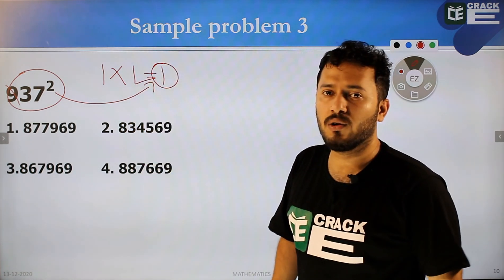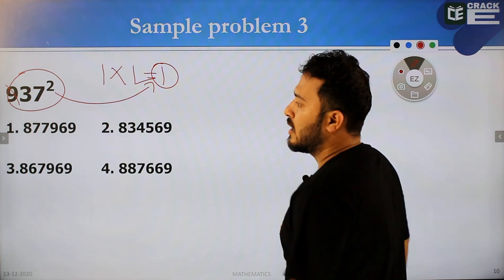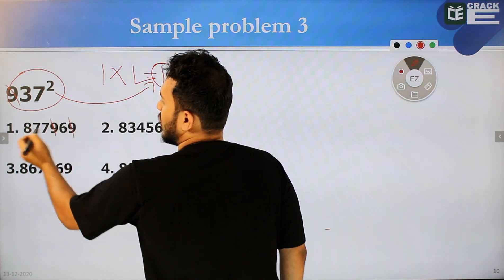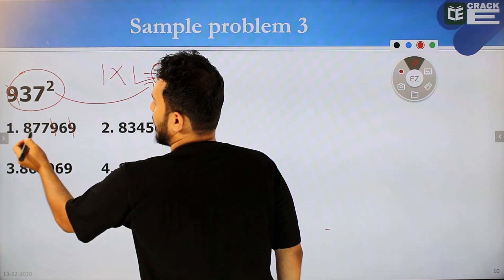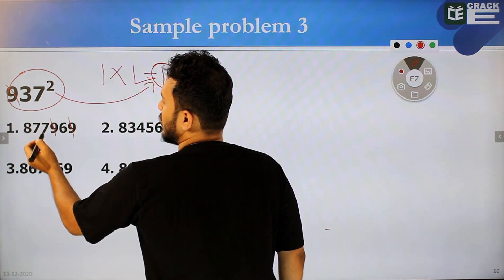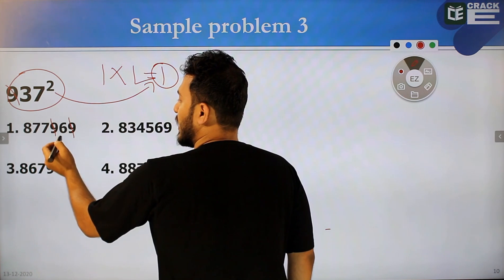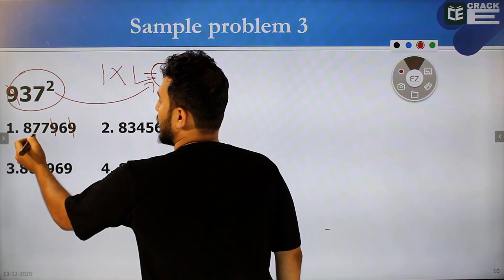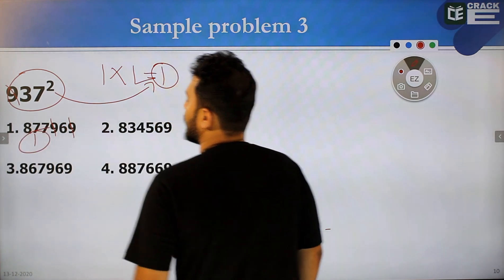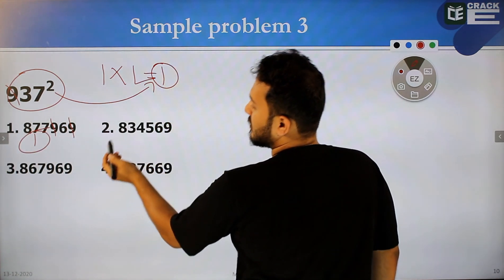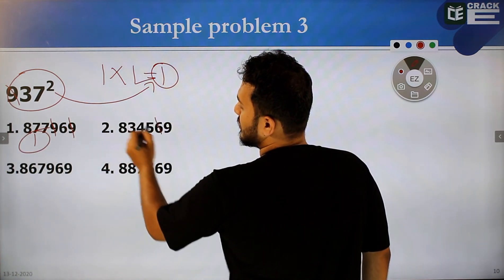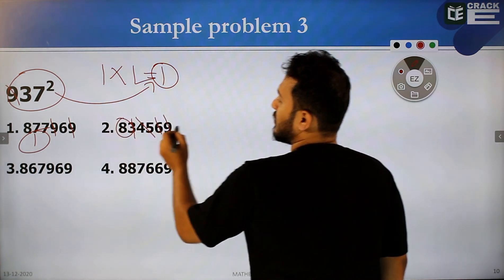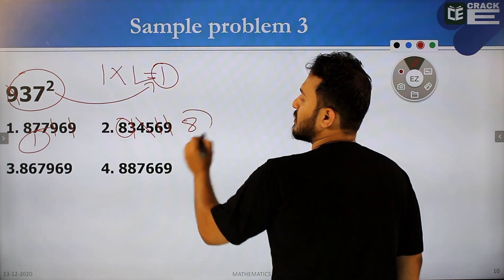Digit sum is 9 — 9 is eliminated. 8 plus 7 is 15, 15 plus 7 is 22, 22 plus 6 is 28, digit sum of 28 is 10, 2 plus 8 is 10, digit sum is 1. Then 8 plus 6 is... 6 is 3. 4 is 5. 9 is the digit sum — so this is the digit sum. 5 is the digit sum.